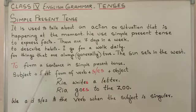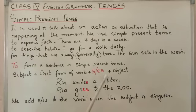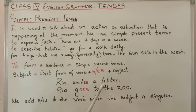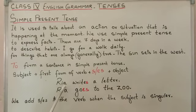To form a sentence in simple present tense, we need subject plus first form of verb plus s or es plus object. For example, Ria writes a letter. Ria goes to the zoo. We add s or es to the verb when the subject is singular.